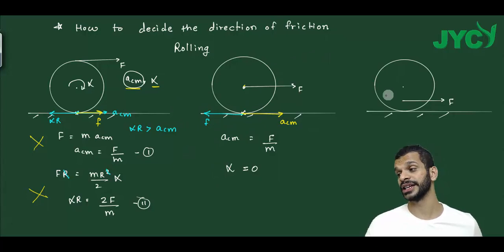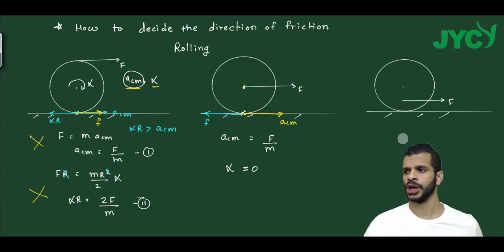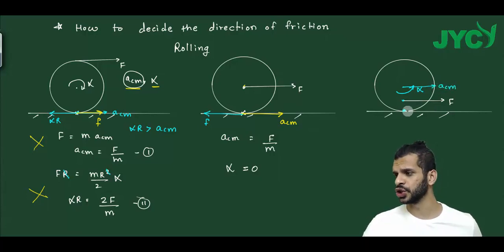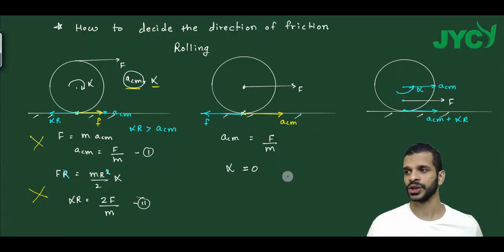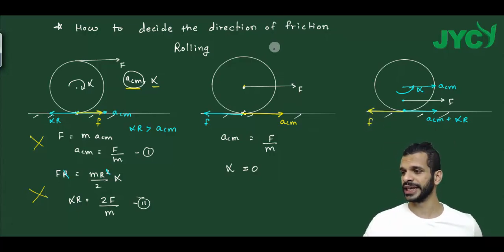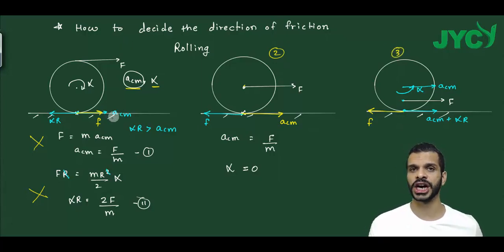In the third case, the force is applied below the center of mass. This force will cause the body to rotate — alpha acts in a certain direction — and acceleration of center of mass is also forward. So the bottom contact point will move forward due to both acceleration of center of mass and alpha·r. Therefore, friction must act backward. So in the second and third cases, friction is backward, and in the first case, friction is forward.